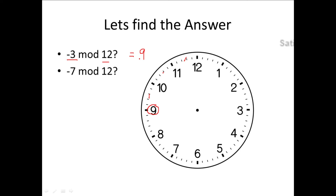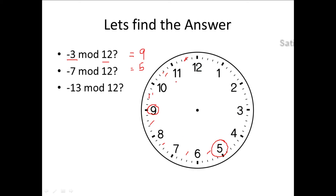Let's take another example: minus 7 mod 12. Since we have a negative number, we go anticlockwise — minus 1, minus 2, minus 3, minus 4, minus 5, minus 6, minus 7 — the answer is 5. Likewise, for minus 13 mod 12, going anticlockwise past minus 12 we reach 11. So the answer is 11.